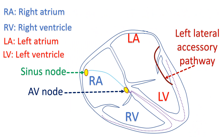Sometimes pre-excitation is not evident in the ECG because of relative competing conduction velocities between the AV nodal pathway and accessory pathway. Similarly, it may not be manifest because the accessory pathway is far away from the sinus node, as in a left lateral pathway. When adenosine prolongs the AV nodal conduction, conduction through the slower accessory pathway becomes manifest as pre-excitation.